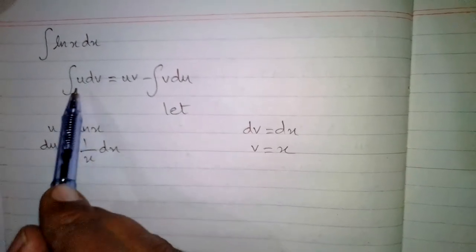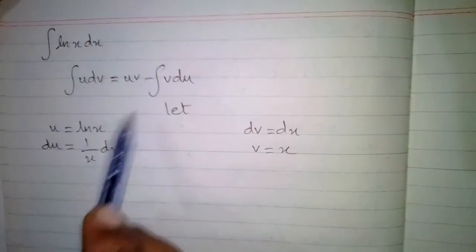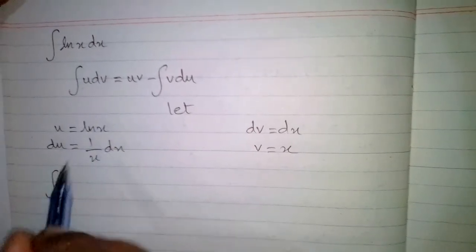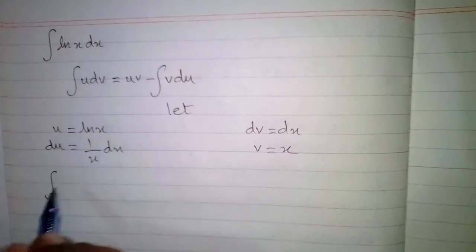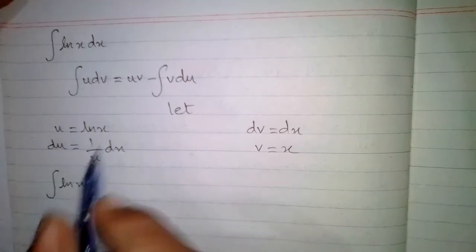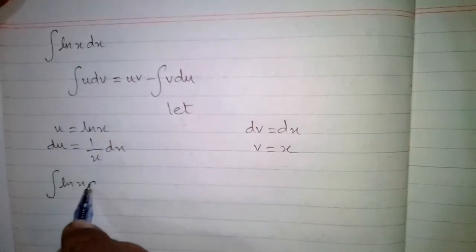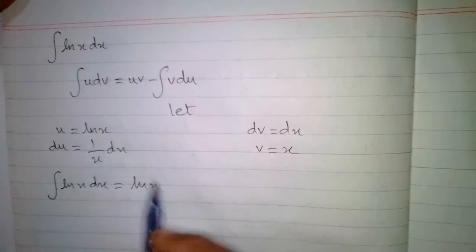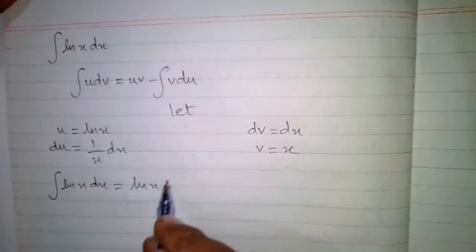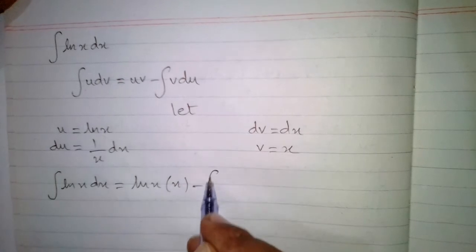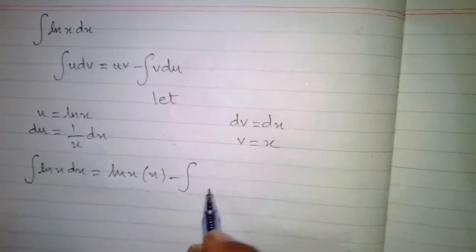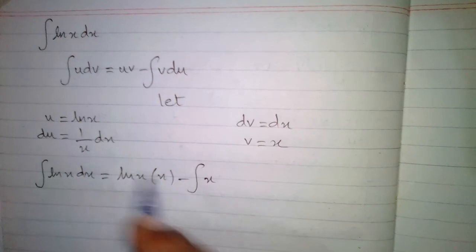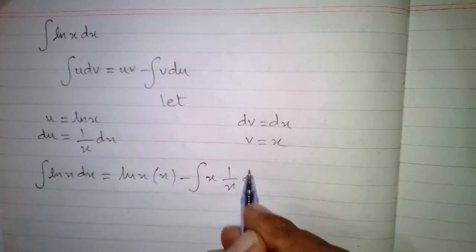Now we will put the values of u, v, dv, and du into the formula. We have the integral of u which is ln x, then dv is dx, and then u is ln x and v is x, then minus the integral of v which is x and du which is 1 over x dx.